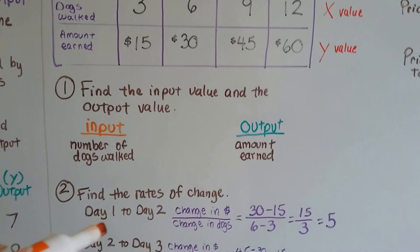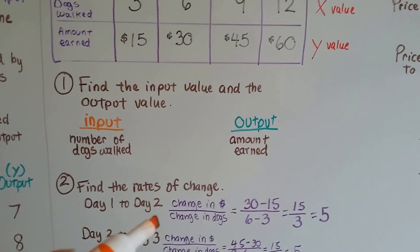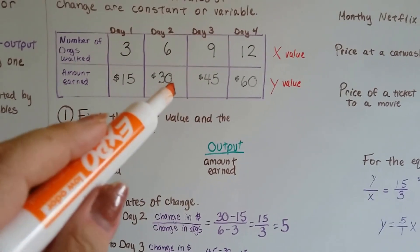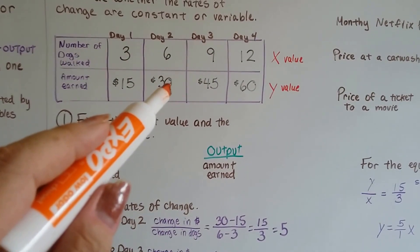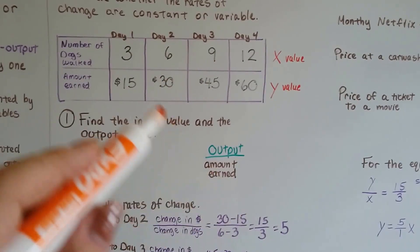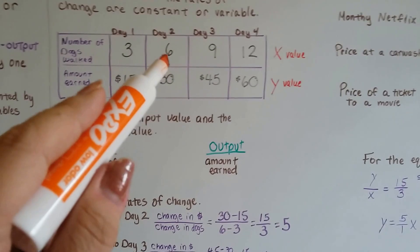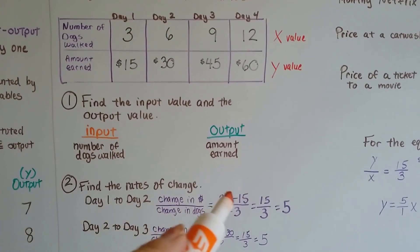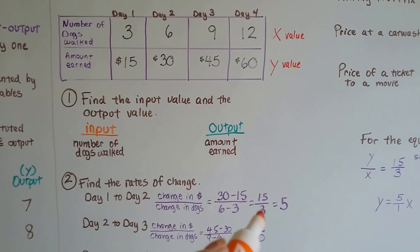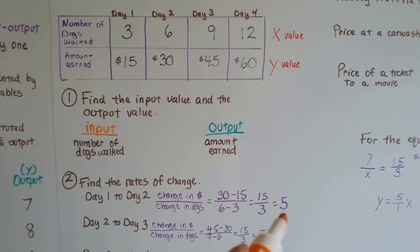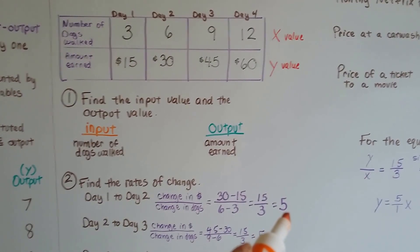We find the rates of change from day 1 to day 2. The change in dollars over the change in dogs. Day 2 is $30, so we've got 30 minus day 1, $15. And the change in dogs is 6 dogs to 3 dogs, and 6 minus 3 is 3. So we've got 15 over 3, which simplifies to 5. That's the rate of change, 5.